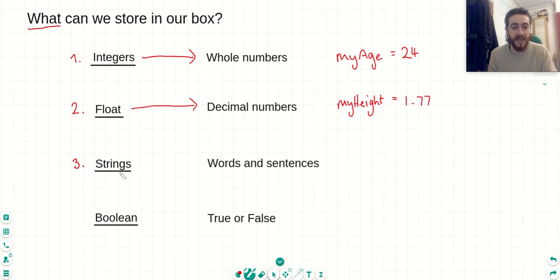Third example, we have strings. Now strings is another computing word. And it means text or words and sentences. So if we wanted to store, say, my name, we would do so like this. Now in order to tell Python that something is a string, we have to use these quotation marks at the beginning and end of our string. And this just tells Python, this is a string, I just want to write some text in here.